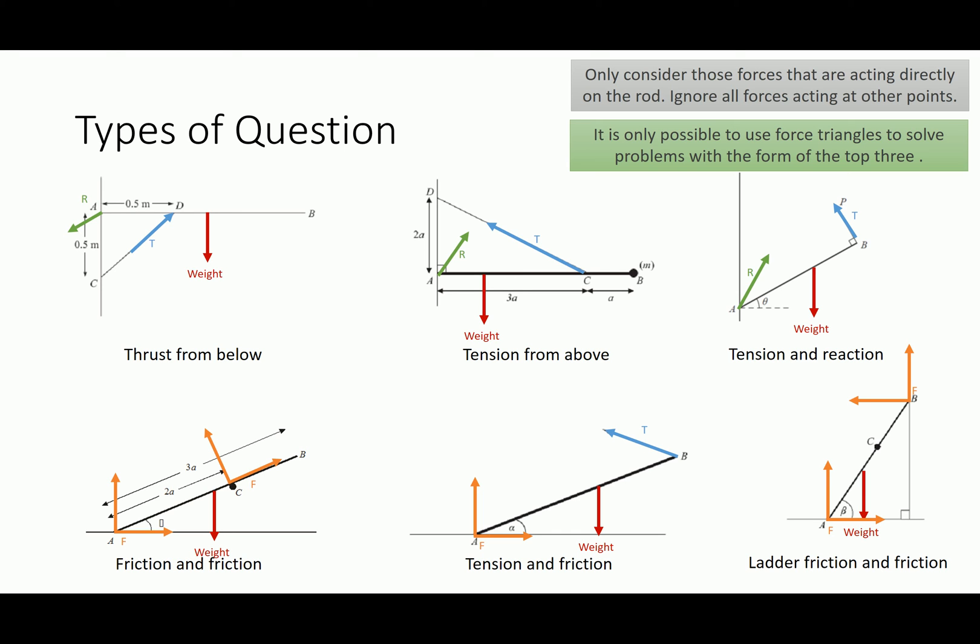So for example with this question I know that there's going to be thrust from this bar that's here. Now thrust acts in two directions, outwards at both ends, so there is going to be some sort of force that's acting on C. But I don't care what that force is because I'm only concerned with forces that act directly on the rod.